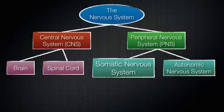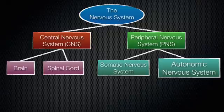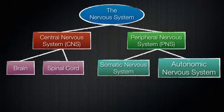And then we have the autonomic nervous system, which is not voluntary — this is the involuntary things that happen in the body. So it controls visceral functions like heart rate, respiration rate, and digestion. Those things you don't need to think about — they just happen. They are involuntary, and that is under the control of the autonomic nervous system.